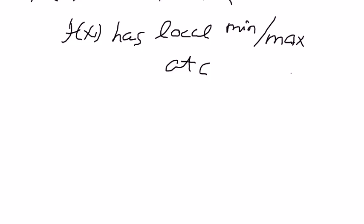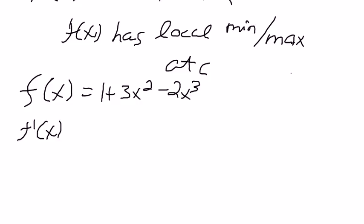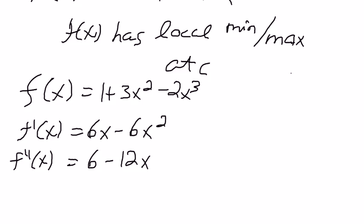So given our function, f of x is going to be 1 plus 3x squared minus 2x cubed. So f prime of x equals 6x minus 6x squared, and f double prime is going to equal 6 minus 12x, which if you factor out the 12, will give us 12 times one half minus x.